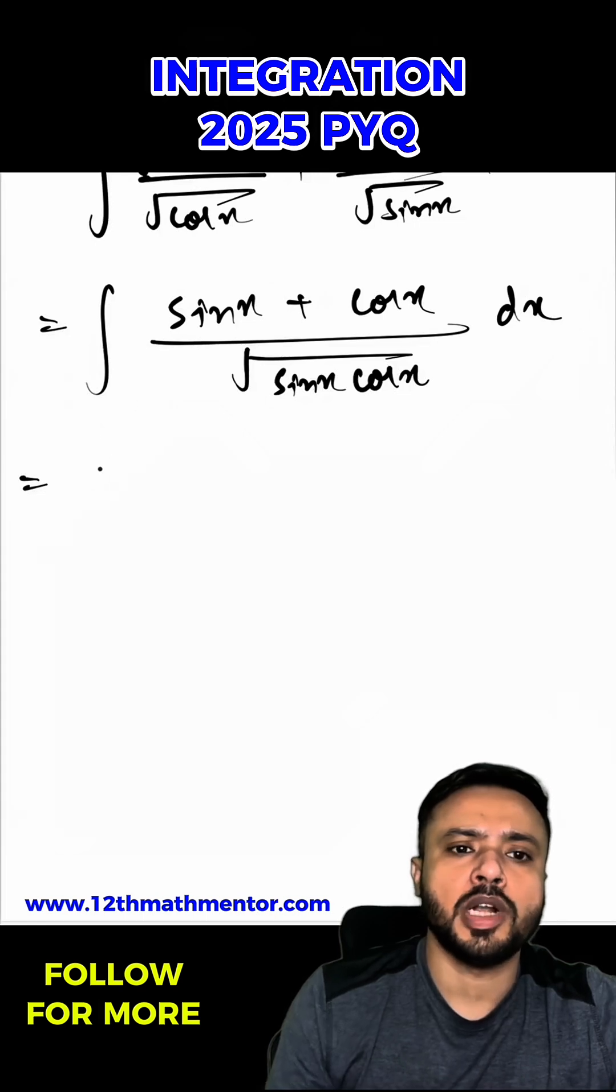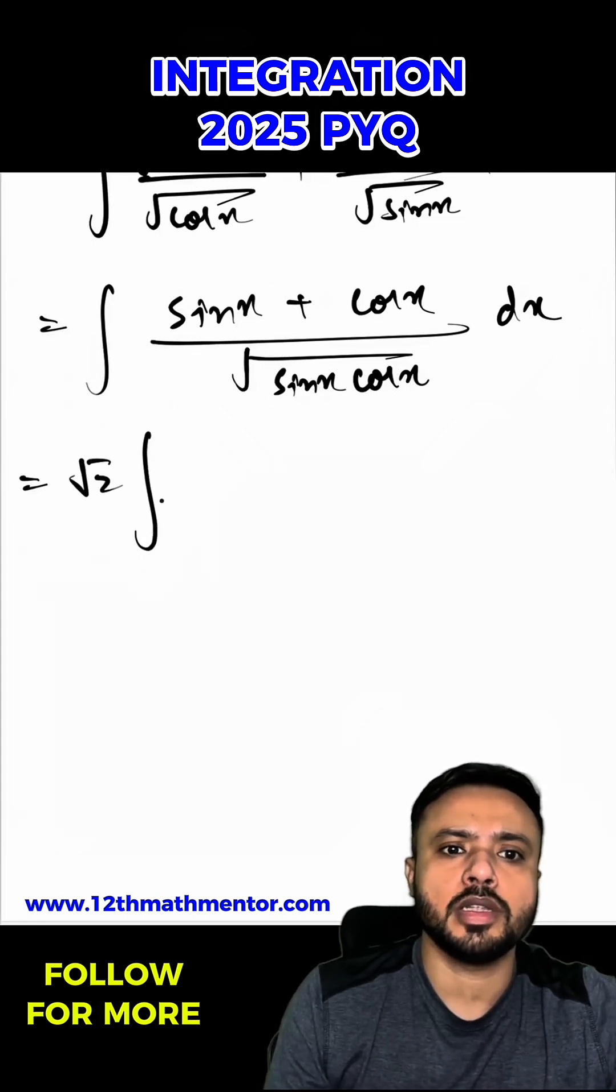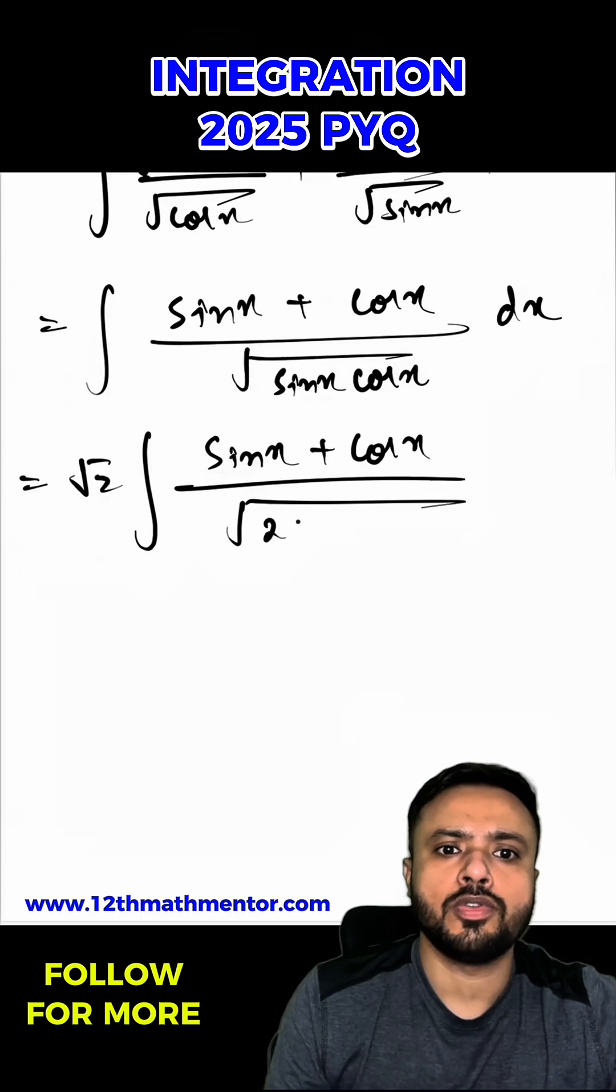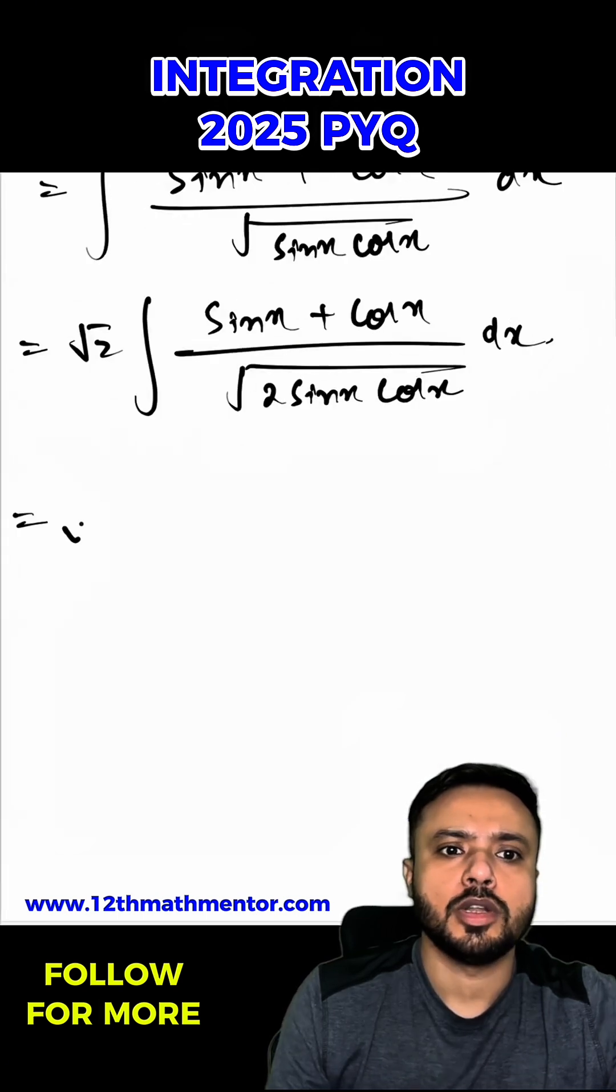Now I'm going to multiply the numerator and denominator by √2, so I can write as √2(sin x + cos x) by √(2 sin x cos x). This is the most important step.